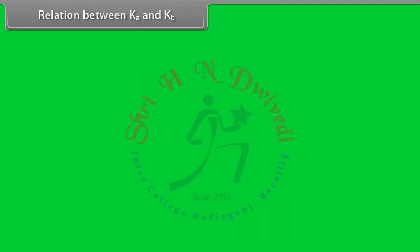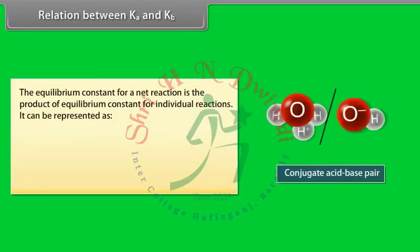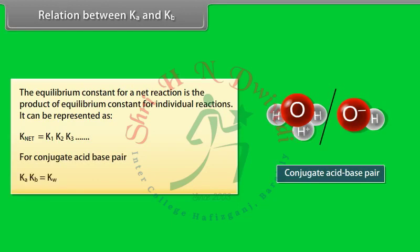The equilibrium constant for a net reaction is the product of equilibrium constants for individual reactions: K_net = K₁ × K₂ × K₃ … For a conjugate acid-base pair, Ka × Kb = Kw.